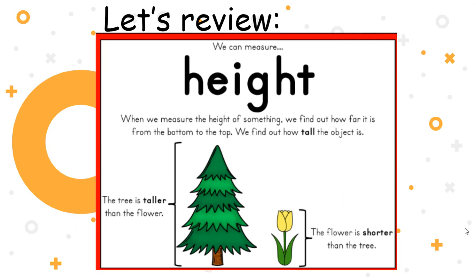So let's review. We have talked about how to measure height. When we measure the height of something, we find out how far it is from the bottom to the top. We find out how tall the object is. So if you see here, they measured from the bottom to the top. Same here. The tree is taller than the flower. The flower is shorter than the tree.